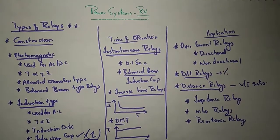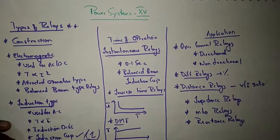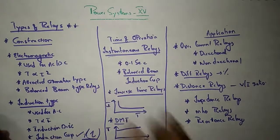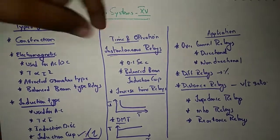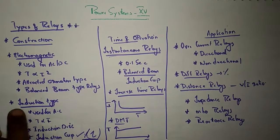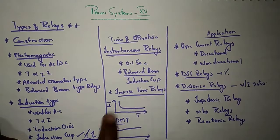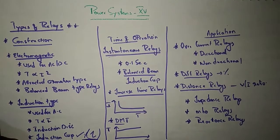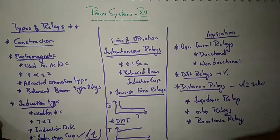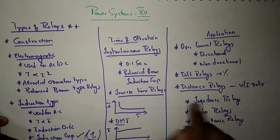Hello everyone, this is Srikant and welcome to UY Electrics. In the previous class we discussed power systems part 15: types of relays and their classification depending upon construction, time of operation, and application. In construction we covered electromagnetic and induction type relays. In time of operation we covered instantaneous relays, inverse time relays, definite minimum time relays, and inverse definite minimum time relays. From an application point of view we covered current relays, differential relays, percentage differential relays, and distance relays.